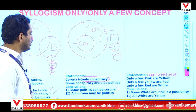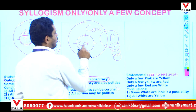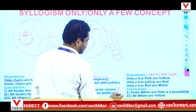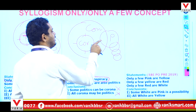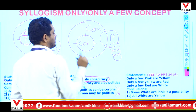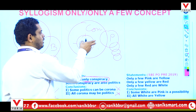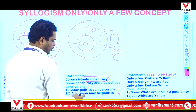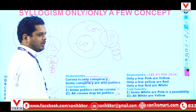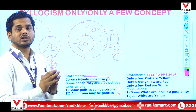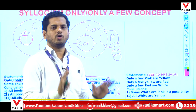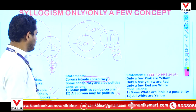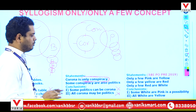All corona may be politics — this is also impossible because there is a certain negative relation there. If the relation is certain, we cannot add any kind of possibility. If the relation is clear, we cannot add any kind of possibility. So the final answer of the given question is: both are false. This question has already been asked in the preliminary exam.